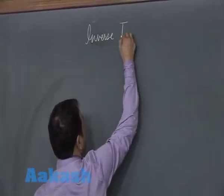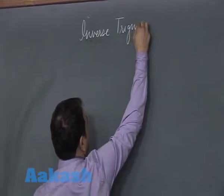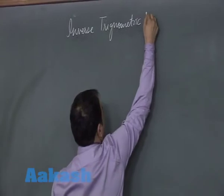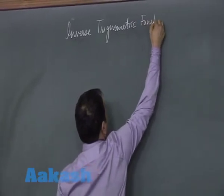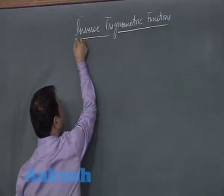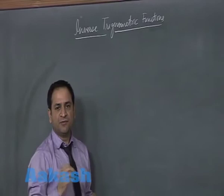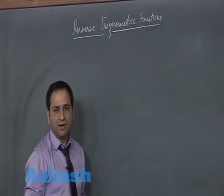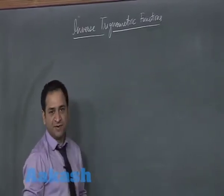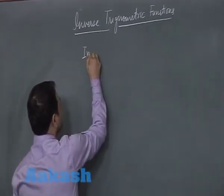Inverse Trigonometric Functions. As you can see, this chapter is a combination of trigonometry and function. You have learnt inverse in the last chapter — what was the important point regarding the inverse? Look at the condition of inverse again. There was a term known as invertible function.